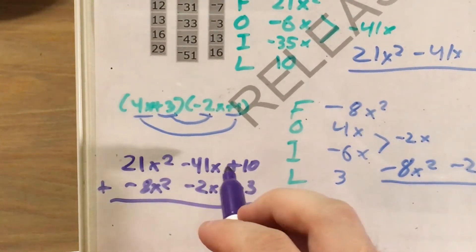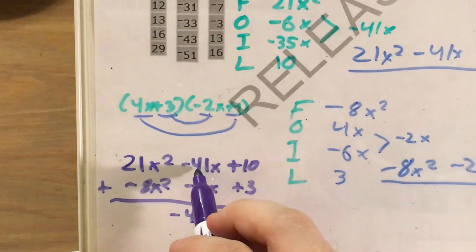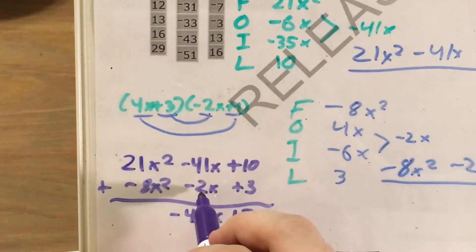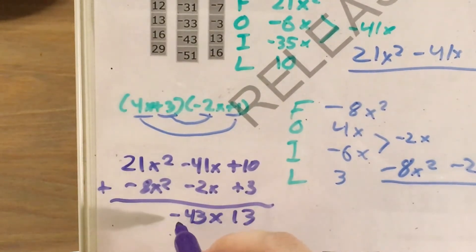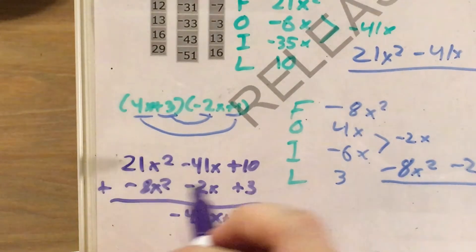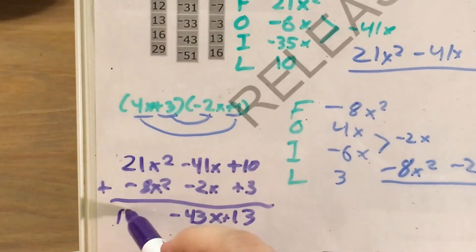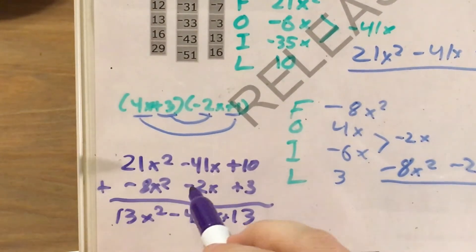Adding my x terms, negative 41 plus negative 2 is the same thing as 41 plus 2 with a negative sign in front of it. It's like if I owed someone $41 and I borrowed two more dollars from them, the amount that I owe would go up to 43, but I consider it negative because it's still money that I owe. Let me put a plus sign there. And finally, for my x squared coefficients, 21 minus 8 is 13.